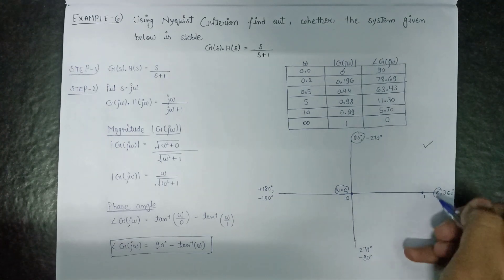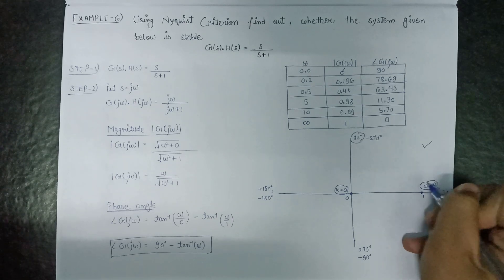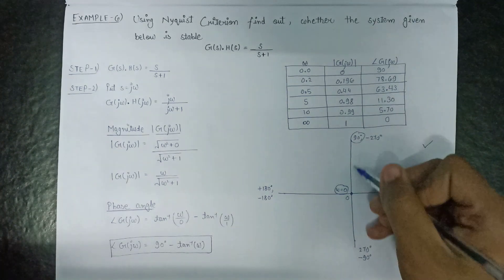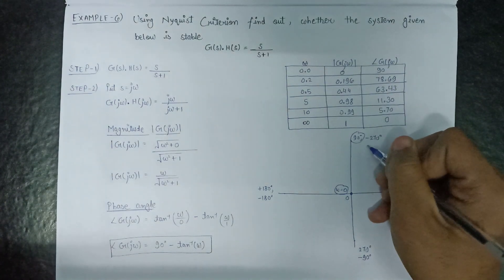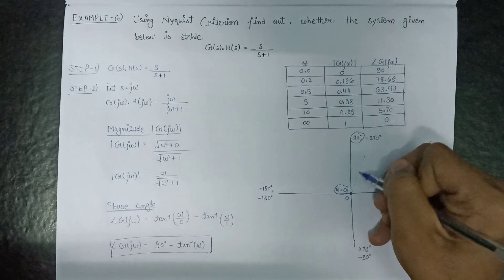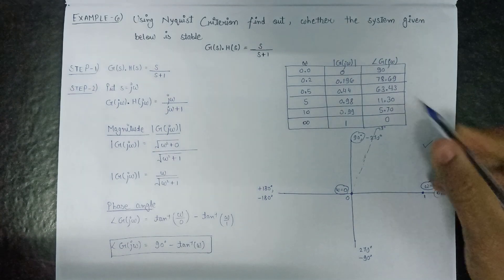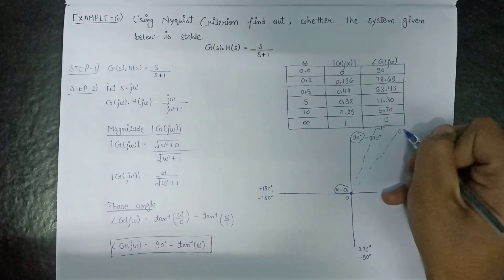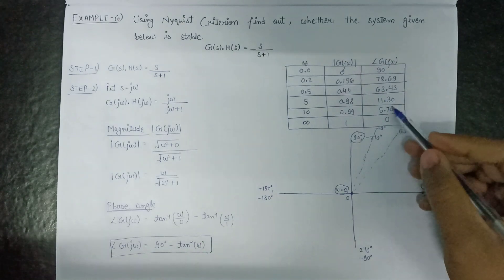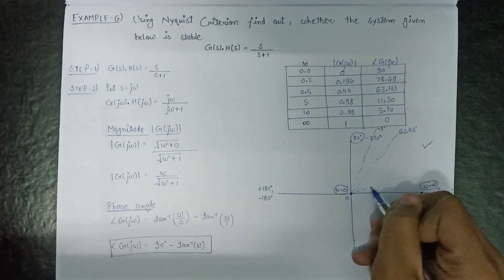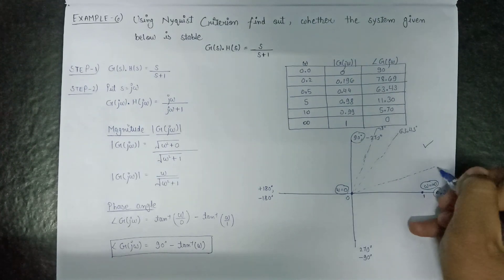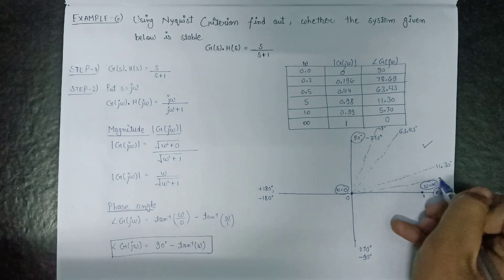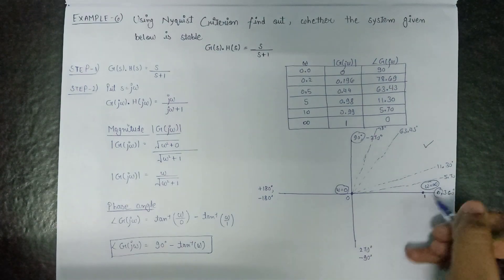At ω equals to infinite the magnitude is 1, so it terminates at magnitude equals 1. Now let's plot all these angles: 90 degrees is here, then 78.69 degrees will be somewhere here, then 63.43 degrees will be here, then 11.30 degrees will be here, then 5.70 degrees will be here, and finally 0 degrees is here.